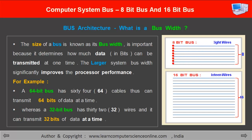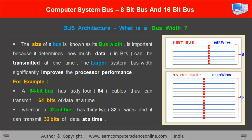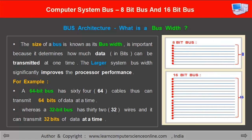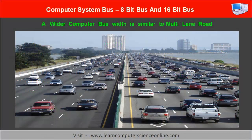Let us consider one example. A 64-bit computer bus has 64 parallel cables, and therefore it can transmit 64 bits of data at a time. Whereas a 32-bit bus has 32 wires, and therefore it can transmit 32 bits of data at a time. We can compare the computer bus width with the number of lanes available on the highway.